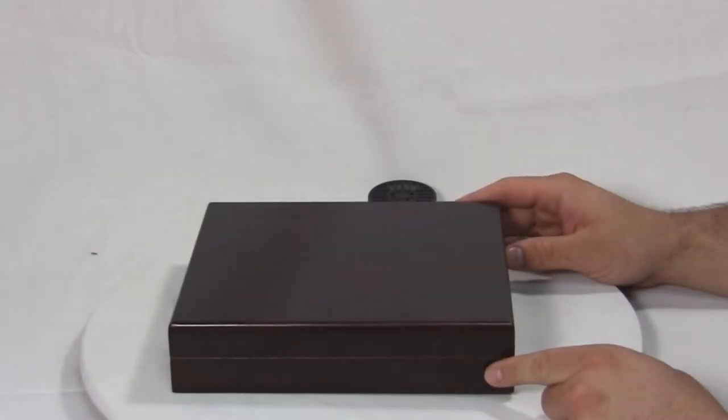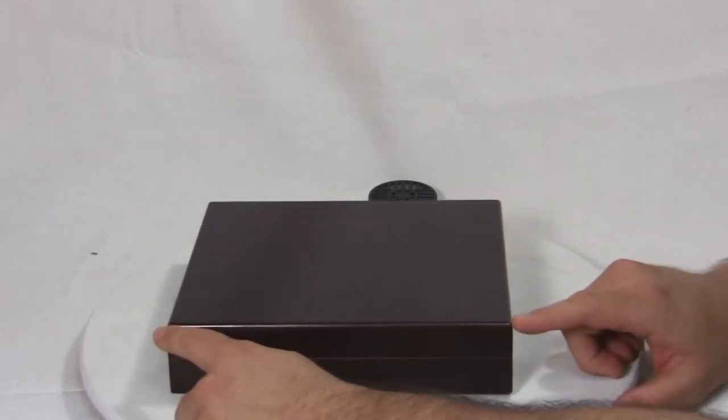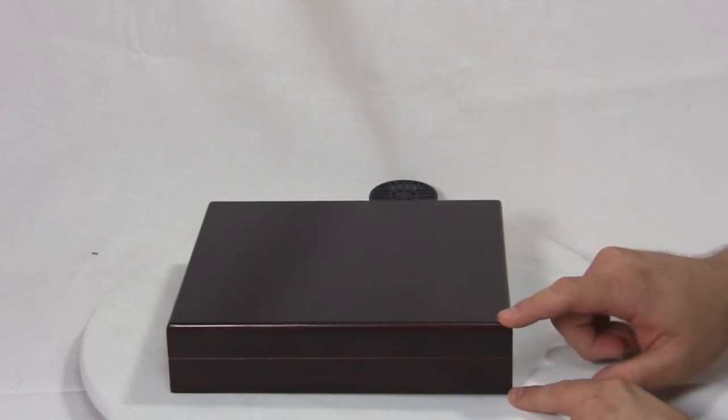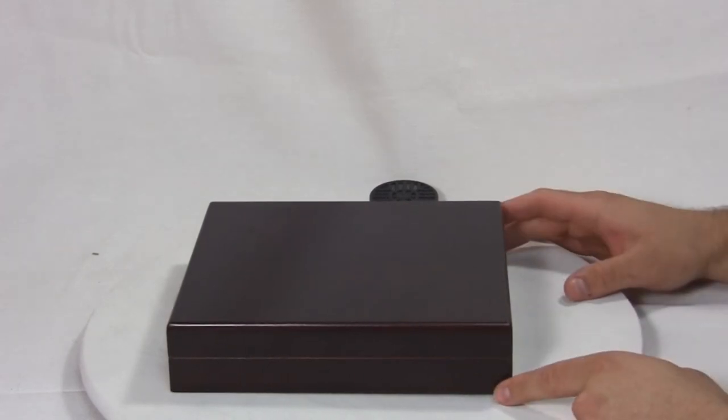This is the Traveler 15 cigar humidor. This humidor measures 11 inches wide, 10 inches deep, and 3 inches tall. This unit holds up to 15 cigars and has a beautiful mahogany finish.